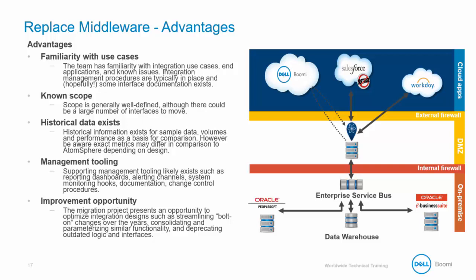There are advantages and challenges when replacing existing middleware, so we will look at the advantages first. If you are replacing another middleware product, then often there is documentation about mappings, connections, or known issues. Also, there is sample data and metrics to compare against, which can make testing easier. There are likely channels already set up for management, alerting, or communication. The replacement can also become an opportunity to optimize the integration, add new functionality, or expand the scope of automated integrations.